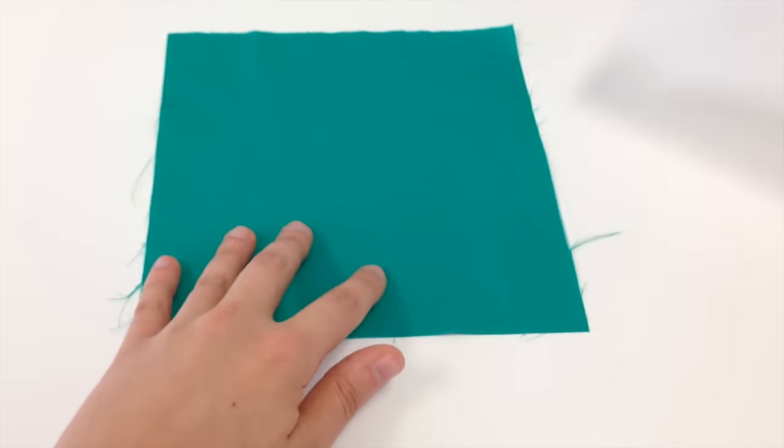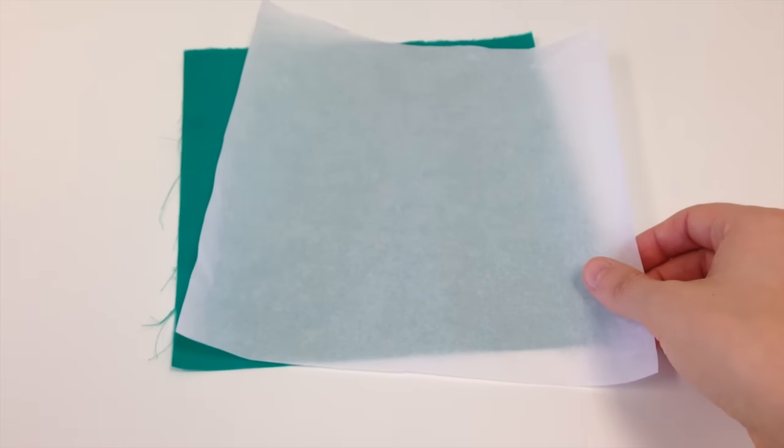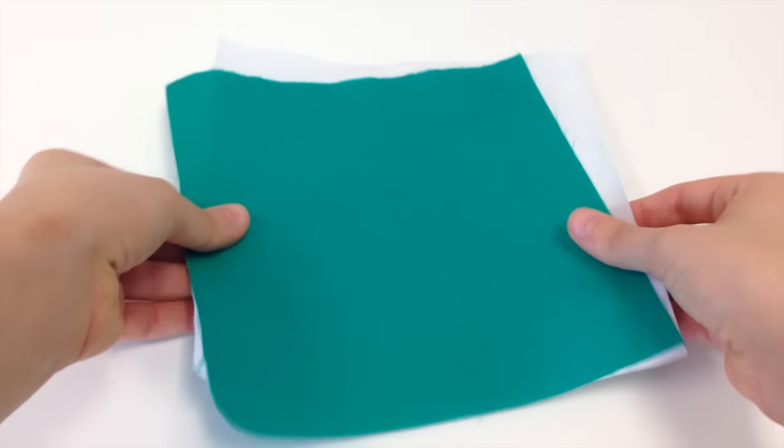Take an 8-inch square of steam-a-seam and peel off the sheet of paper to expose the glue side. Place your 8-inch square from fabric A on top of the glue side and iron fabric to steam-a-seam.